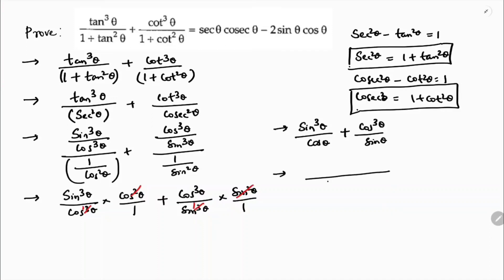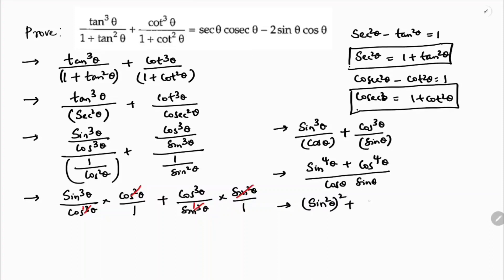Taking LCM as cosθ·sinθ: multiply the first term by sinθ to get sin⁴θ, and the second term by cosθ to get cos⁴θ. So we have (sin⁴θ + cos⁴θ) / (cosθ·sinθ). We can write sin⁴θ as (sin²θ)² and cos⁴θ as (cos²θ)².